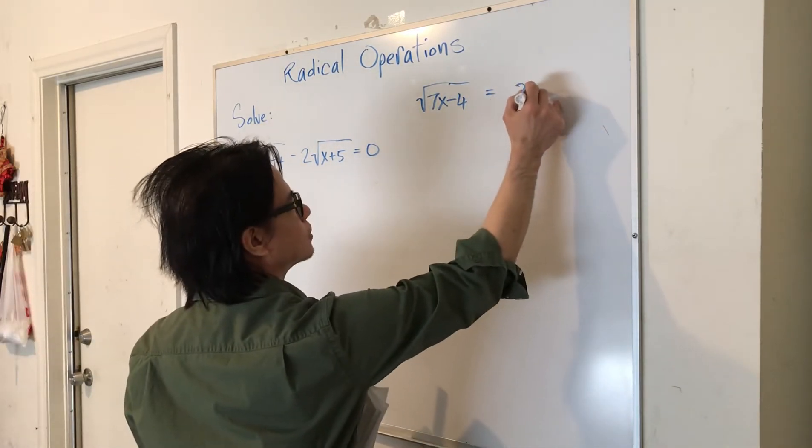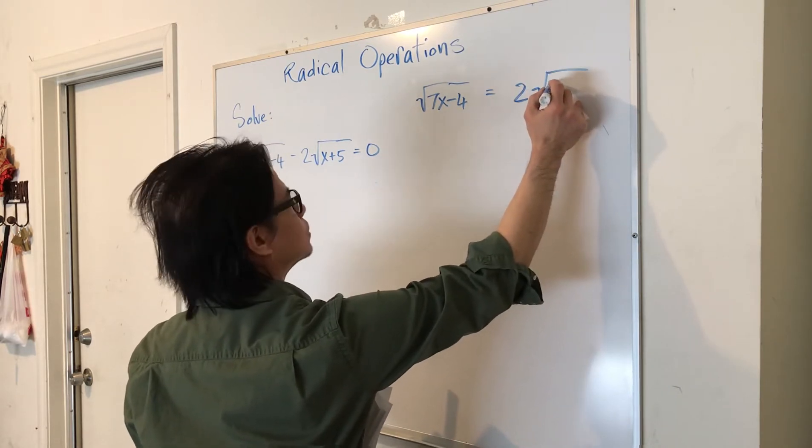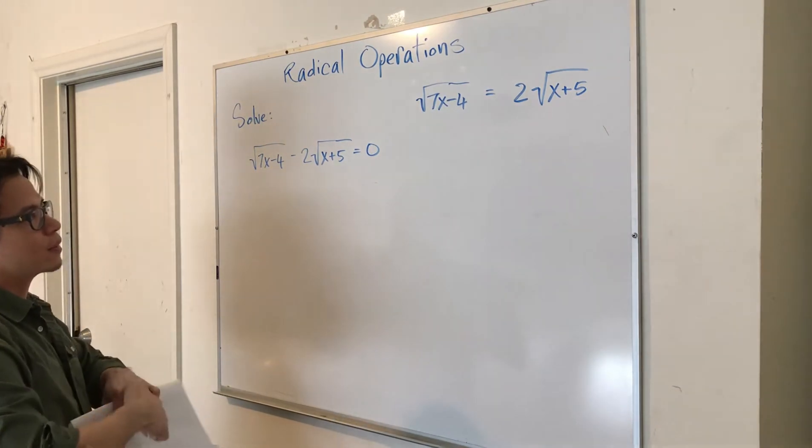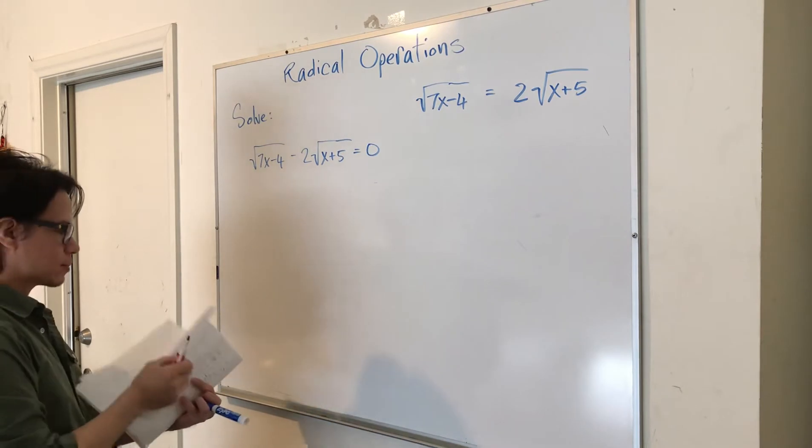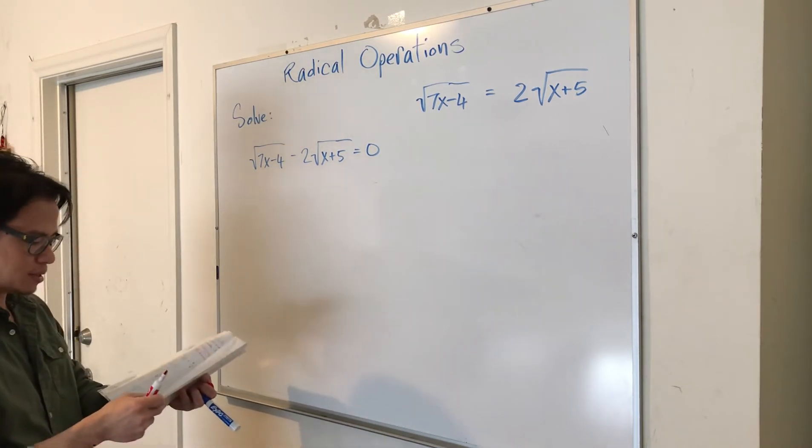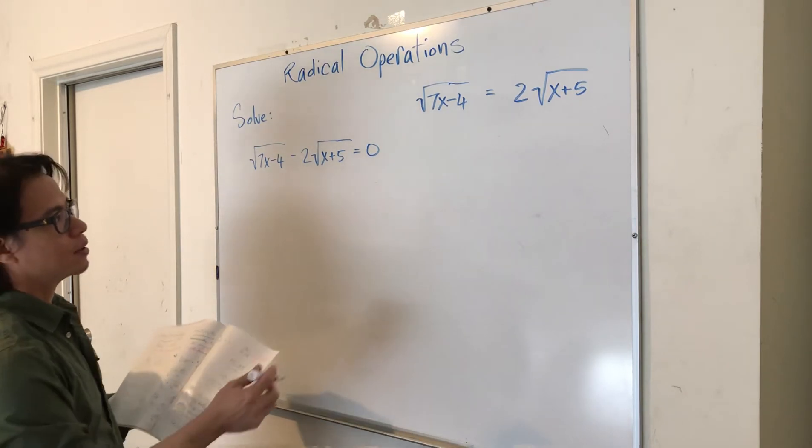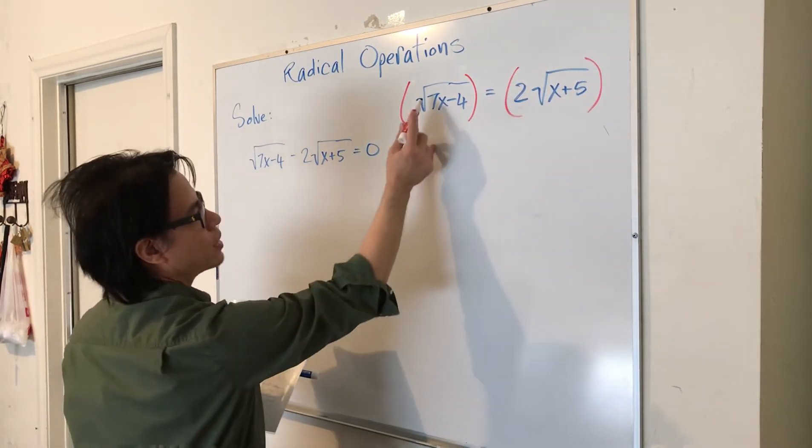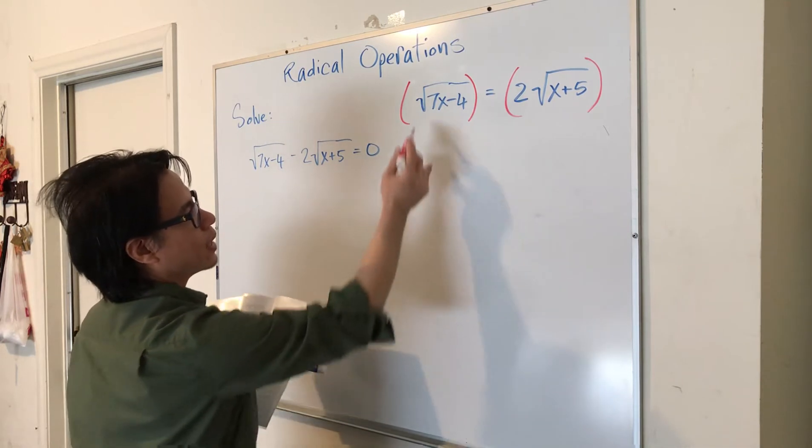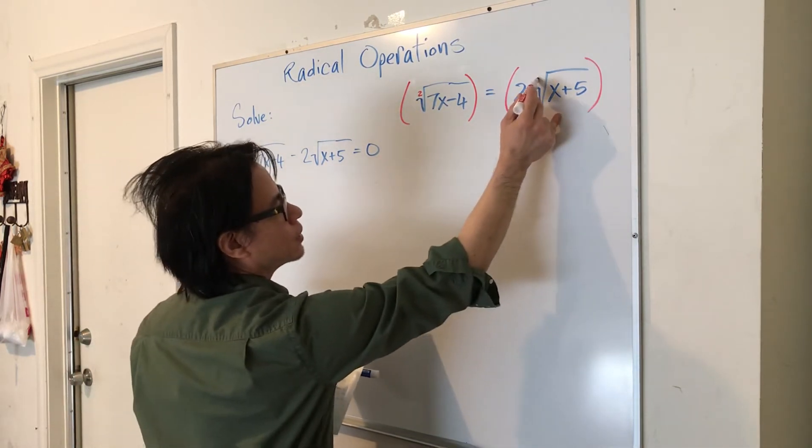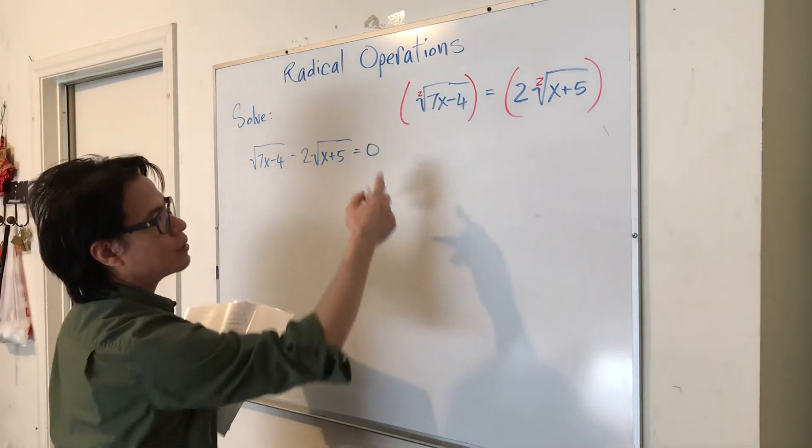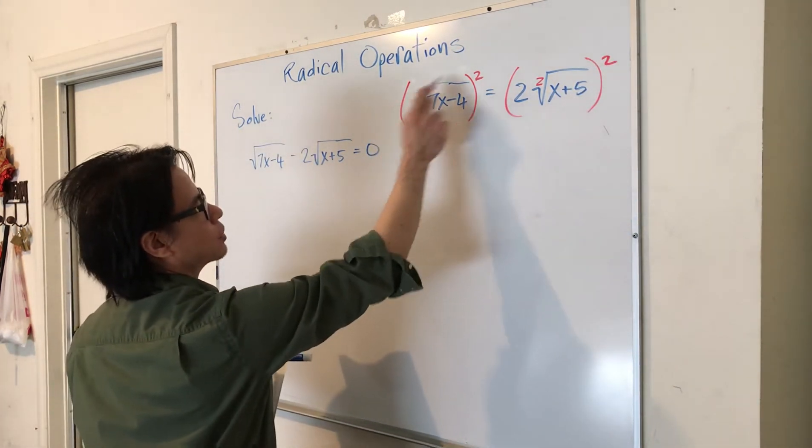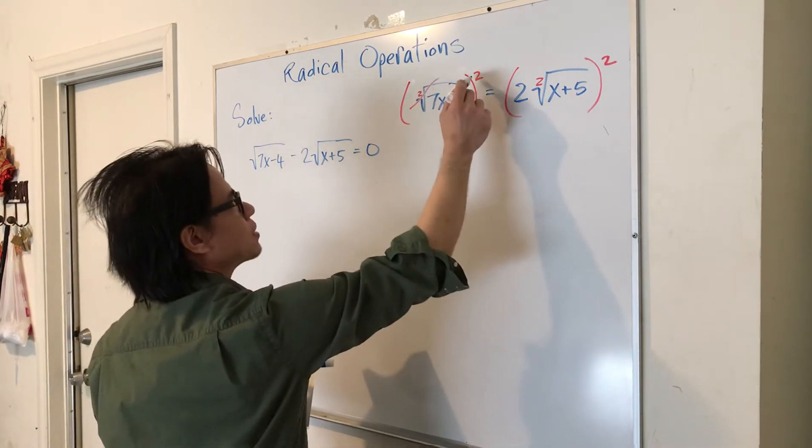So on the left side we have 7X minus 4, on the right side we'll have 2 square root of X plus 5. This is an interesting one here because step 2 says raise both sides of the equation to the correct power, so we need to determine what would be your exponent here. And in order to know that you have to recognize that there's a little 2 here that is invisible, so if you want to cancel out your radical you need to take it to the second power. So here it will cancel out, the square root will cancel out with the exponent.